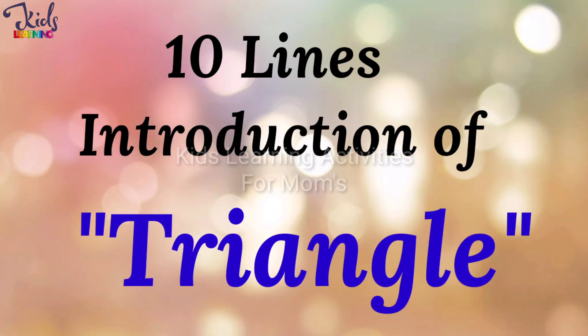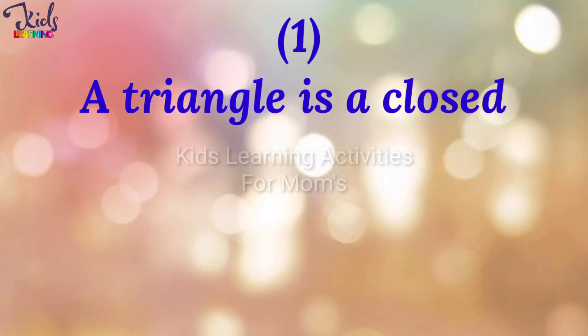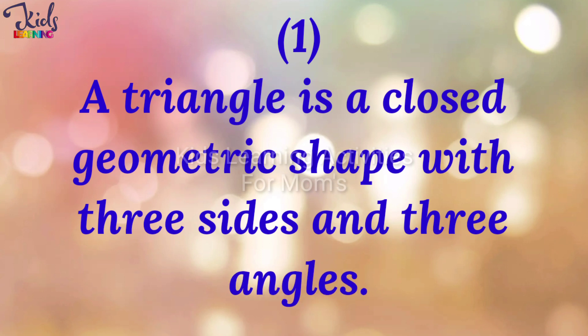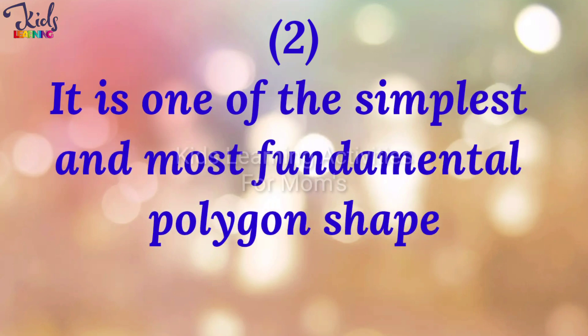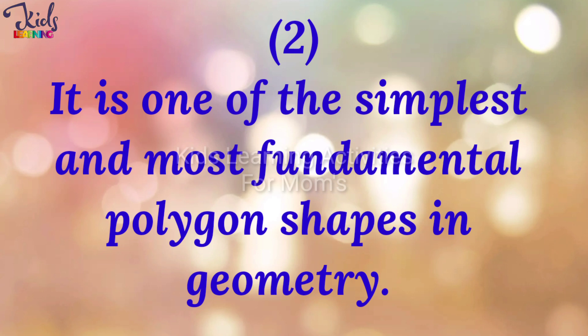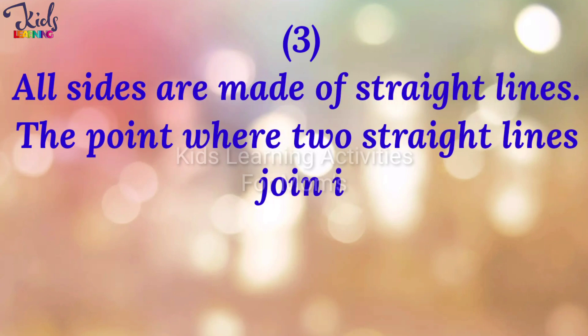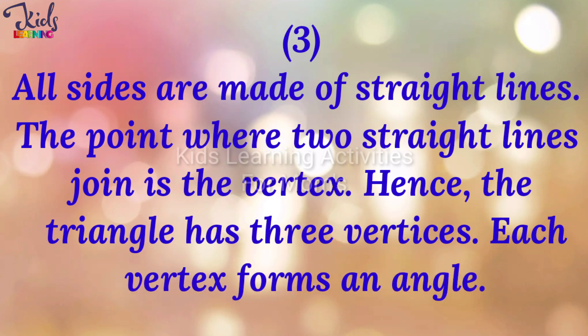A triangle is a closed geometric shape with three sides and three angles. It is one of the simplest and most fundamental polygon shapes in geometry. All sides are made of straight lines. The point where two straight lines join is the vertex. Hence, the triangle has three vertices, and each vertex forms an angle.